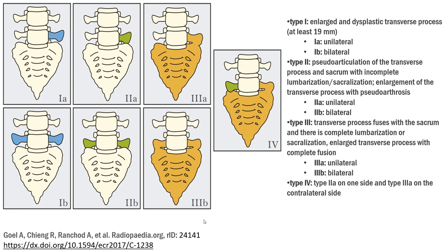Type 3a, we can see in image 3a, is a unilateral transverse process fused with the sacrum, and there is complete lumbarization or sacralization.